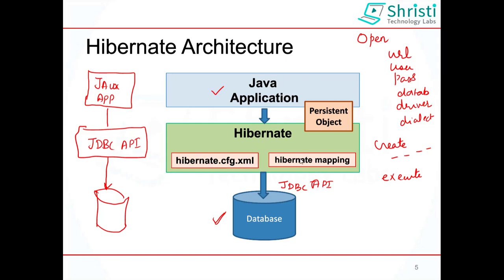The Hibernate configuration file, hibernate.cfg.xml, contains the database URL, username, password, dialect, and driver name. The next component is the Hibernate mapping. When working with JDBC you set values for individual columns, but with Hibernate you convert your Java class into a database table, instance variables into columns, and each object into a row. All that information goes in the mapping document, which can be in the form of XML or annotations. XML is outdated, so we use annotations which specify the column name, column length, the ID, and the table name. The configuration file can be XML or properties format.